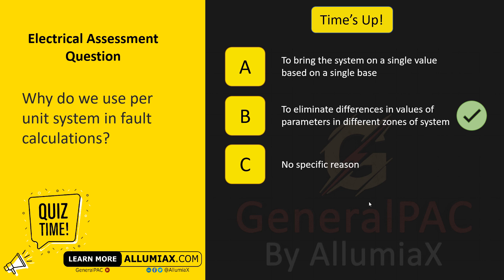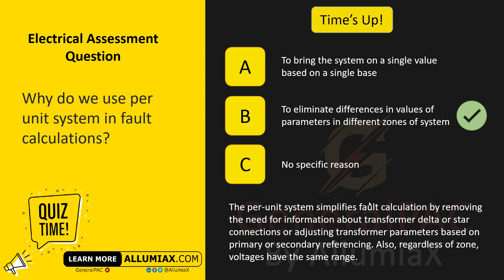The answer is B — to eliminate differences in values of parameters in different zones of the system. The per-unit system simplifies fault calculation by removing the need for information about transformer delta or star connections, or adjusting transformer parameters based on primary or secondary referencing. Also, regardless of zone, voltages have the same range.